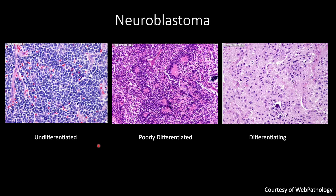Here are pictures of neuroblastoma, courtesy of Web of Pathology — a website I would highly recommend. This is undifferentiated: you have fibrous septa but you don't really see neuropil — it's just small, round, blue cells. Here, poorly differentiated, you do see the neuropil and the Homer Wright rosettes. And then differentiating: you see abundant neuropil and some differentiating neuroblasts that kind of look like ganglion cells.